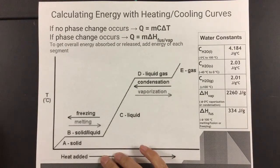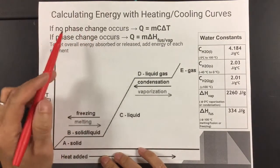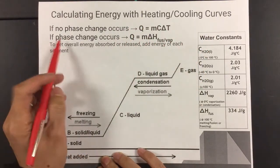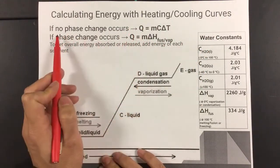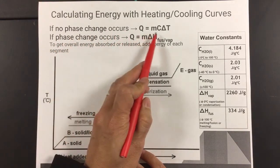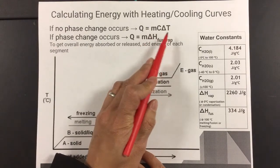Today we're looking at calculating heat energy with the heating and cooling curve. There are two equations: one where we're looking at no phase change occurring, and when that's the case, we use Q equals m c ΔT.